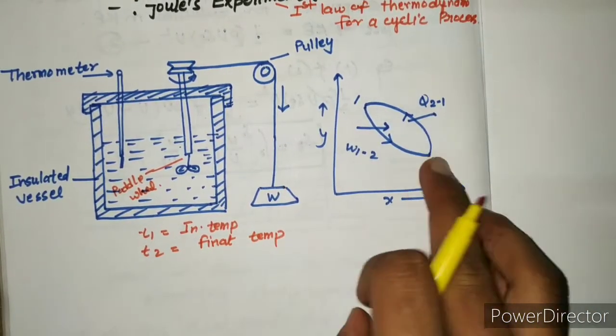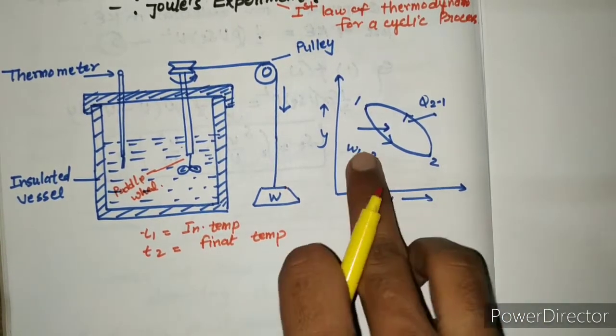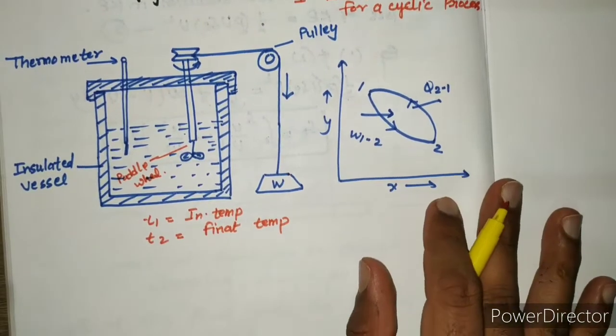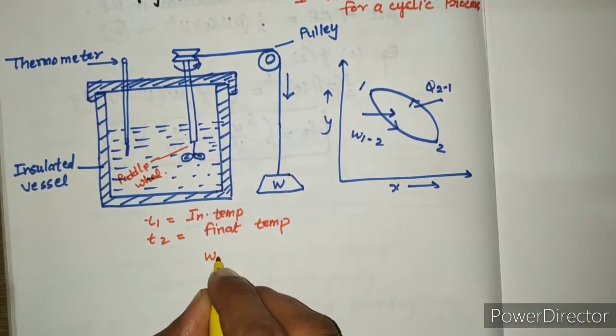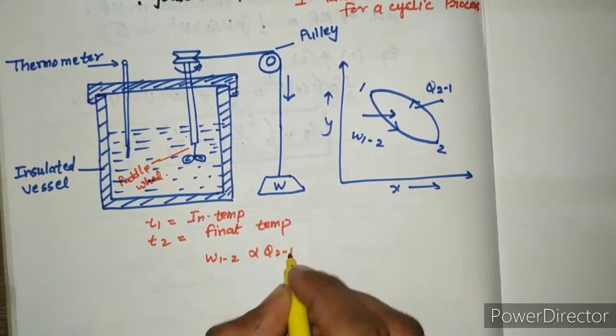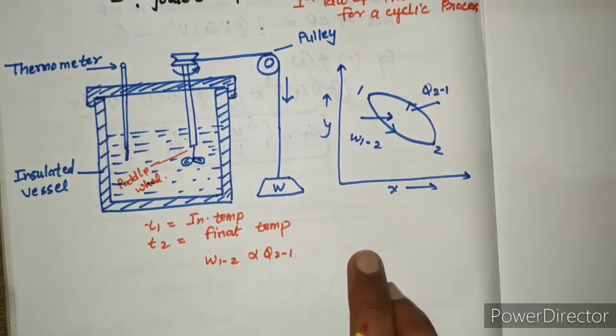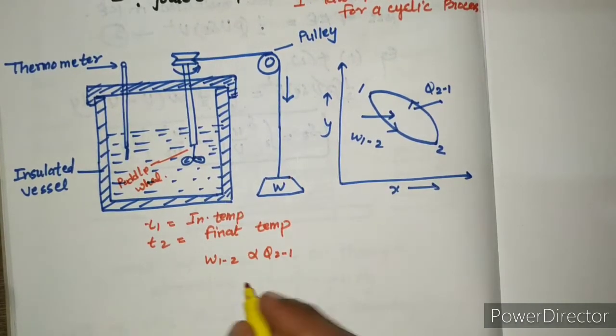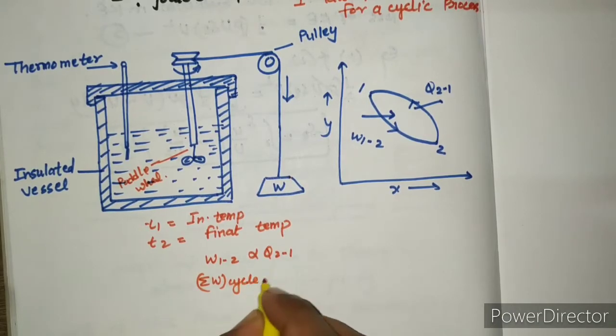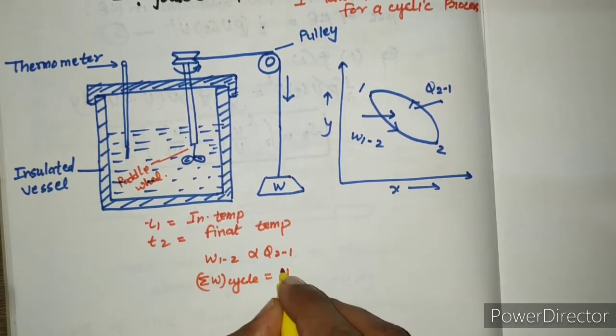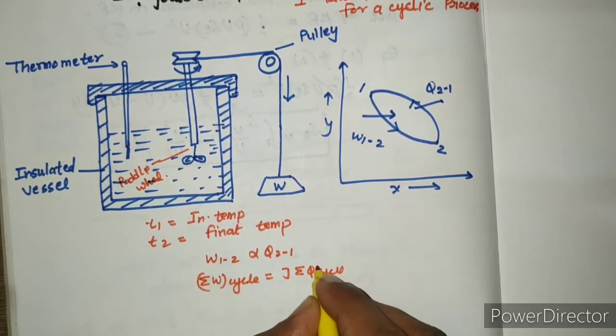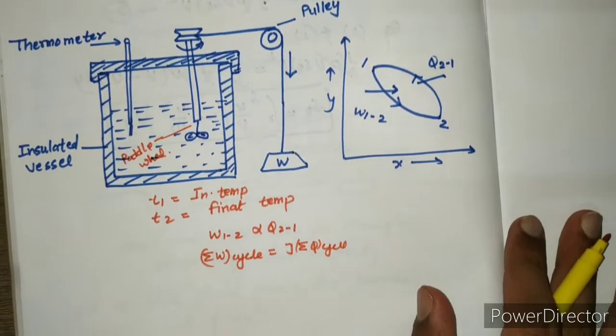A complete cycle with work supplied to the system w12 and heat transfer q21. Then form the equation: w12 is directly proportional to q21. This is a cyclic process and delta w cycle equals constant J times sigma q cycle.